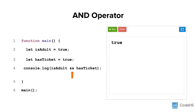Logical operators are typically used to evaluate whether two or more expressions are true. For example, we can use two Boolean variables with the and operator to determine whether someone should be permitted to attend an event that requires both being an adult and having a ticket. When both isAdult and hasTicket are true, the expression evaluates to true. If one or more of the values is false, it evaluates to false — for example, if the person was an adult but did not have a ticket, the program returns false.